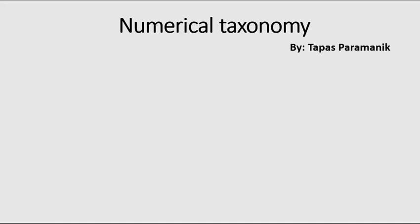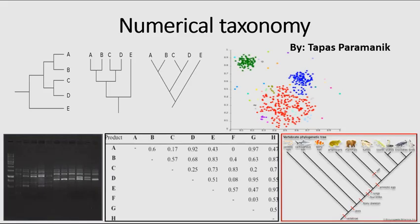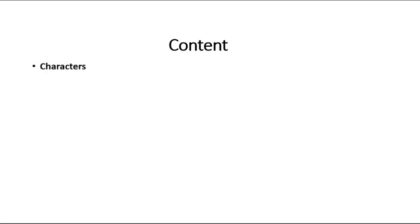Hello everyone, today's video is about numerical taxonomy and it is part two. In the last video we already discussed the first two components of numerical taxonomy — characters and variations. Now in this video we are going to discuss the third component.